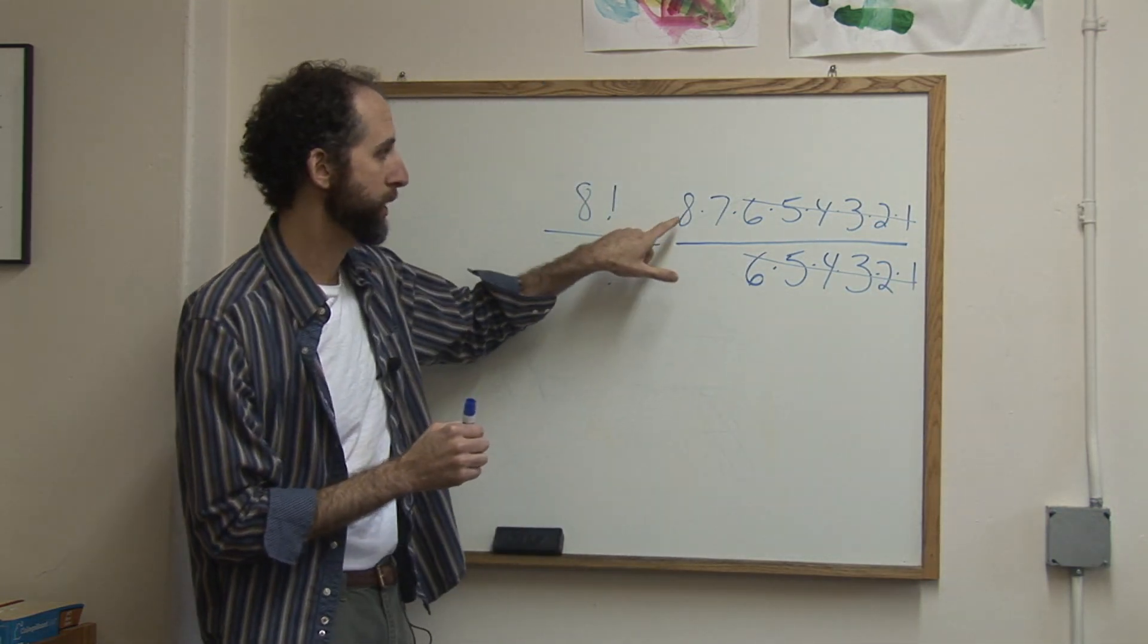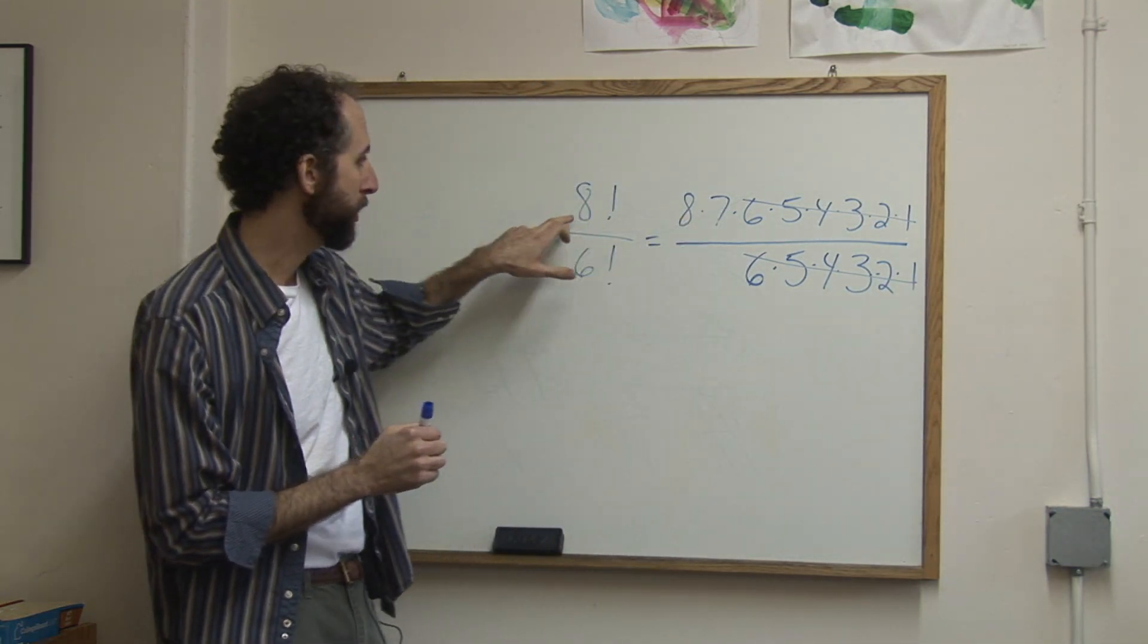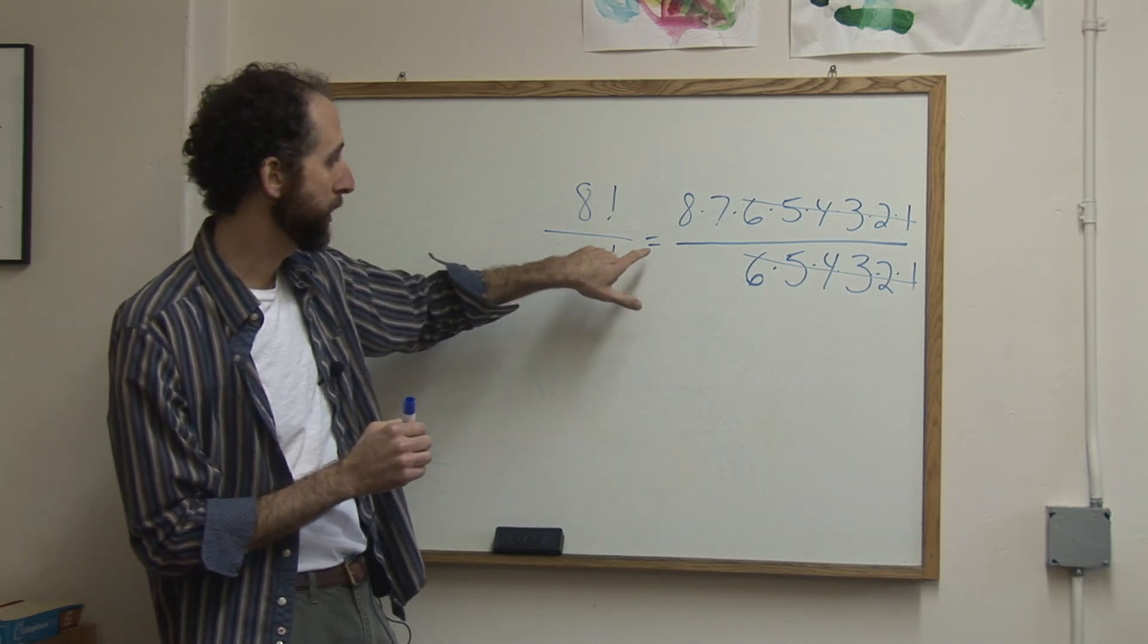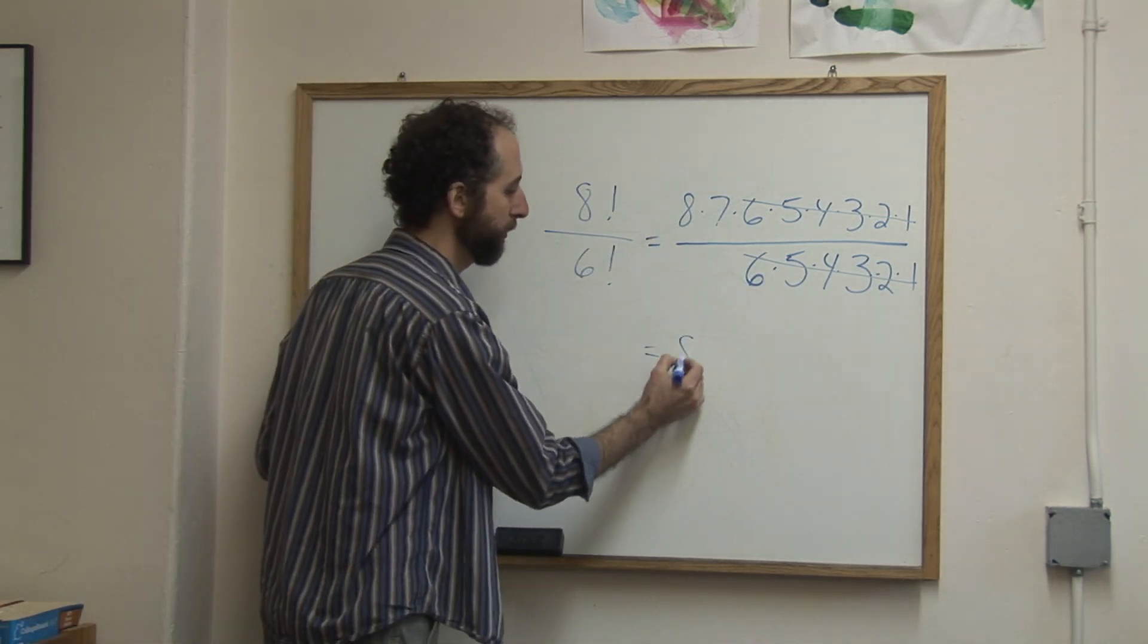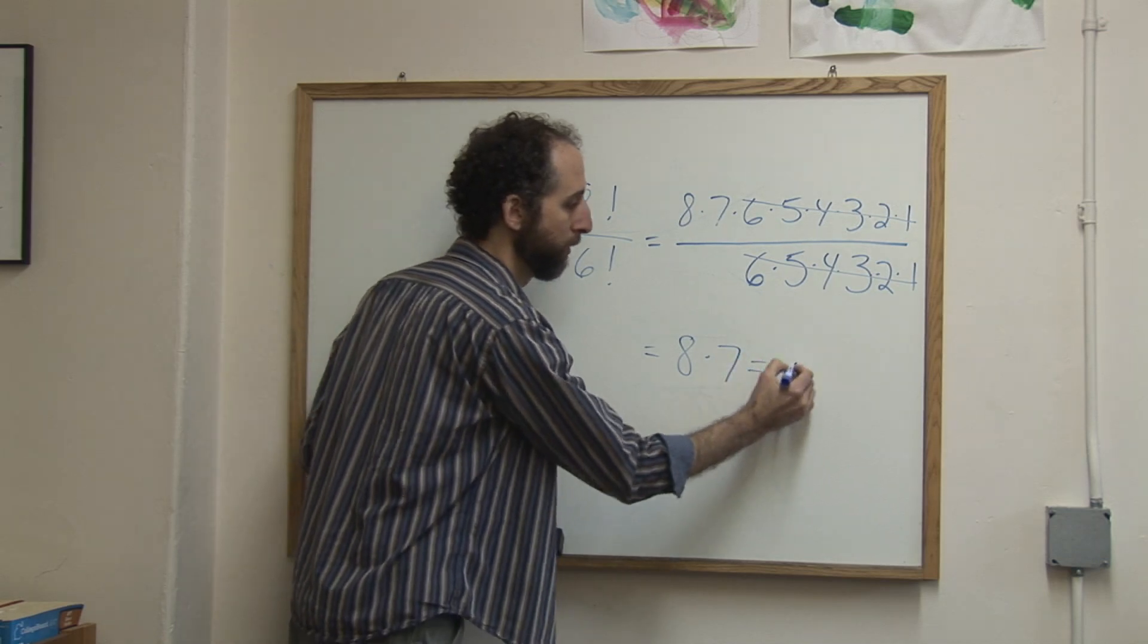Leaving me actually just 8 times 7. So 8 factorial over 6 factorial is in fact just 8 times 7, which is 56.